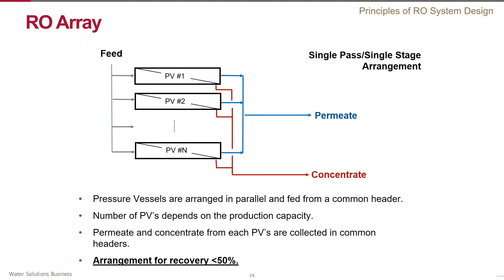In a RO architecture, there are two basic configurations that can be combined to achieve various design targets. The first one is called the stage — a group of pressure vessels arranged in parallel with common feed, permeate, and concentrate headers. The other configuration is called a pass, which can combine individual pressure vessels, stages, or stages with a common permeate header. The simplest single-pass, single-stage train typically achieves around 50% recovery — less for seawater, around 40–45%, and sometimes more for brackish water.